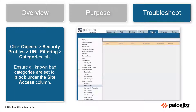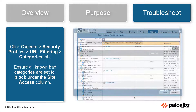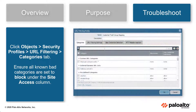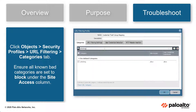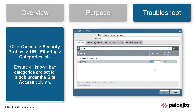Under Objects, Security Profiles, URL Filtering, click the Categories tab. Ensure all known bad categories such as phishing are set to block under the Site Access column. This will ensure the best practice check passes.